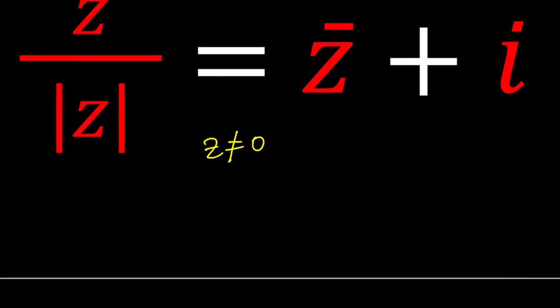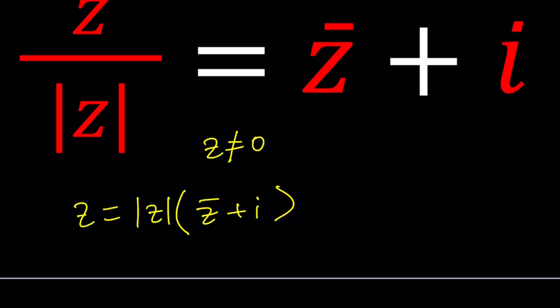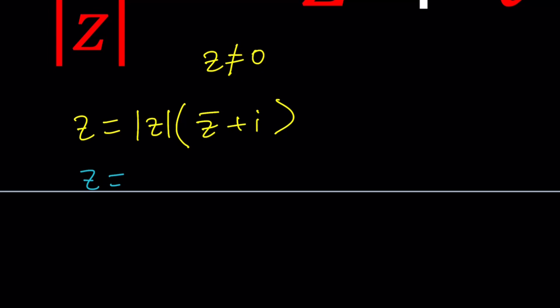Cross-multiplying gives us Z equals the absolute value of Z multiplied by Z bar plus I. Just remember that Z bar is the complex conjugate of Z, which when multiplied by Z and added to Z gives us a real number. That's how the conjugate can be defined. Now we're going to use our magic formula, called Z equals A plus B I, which is also the name of this channel.